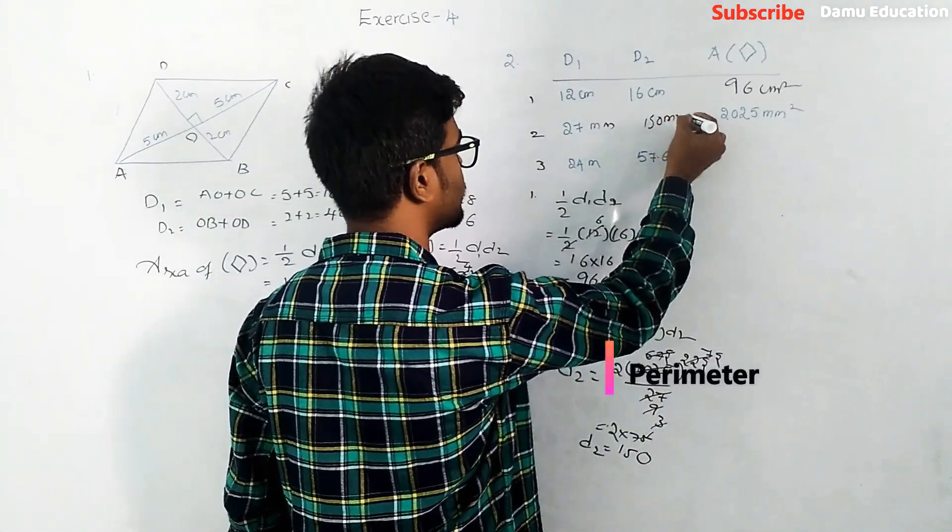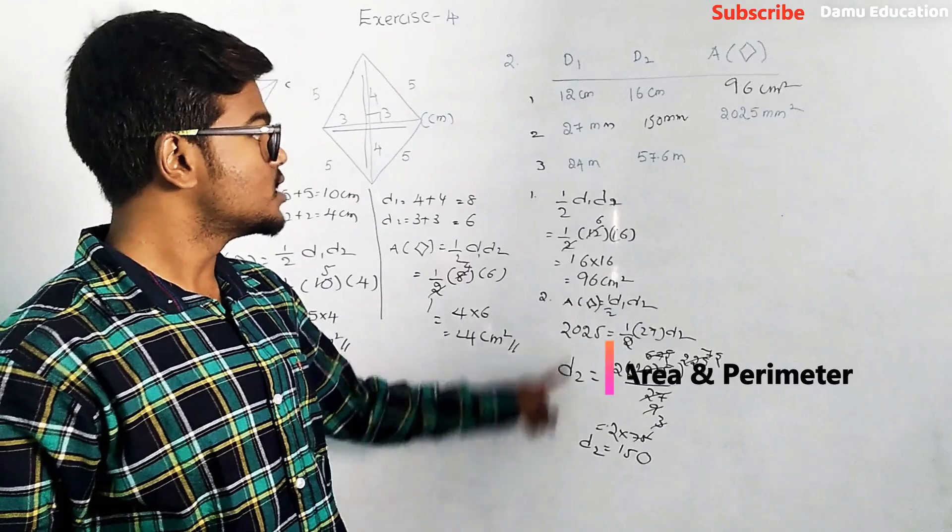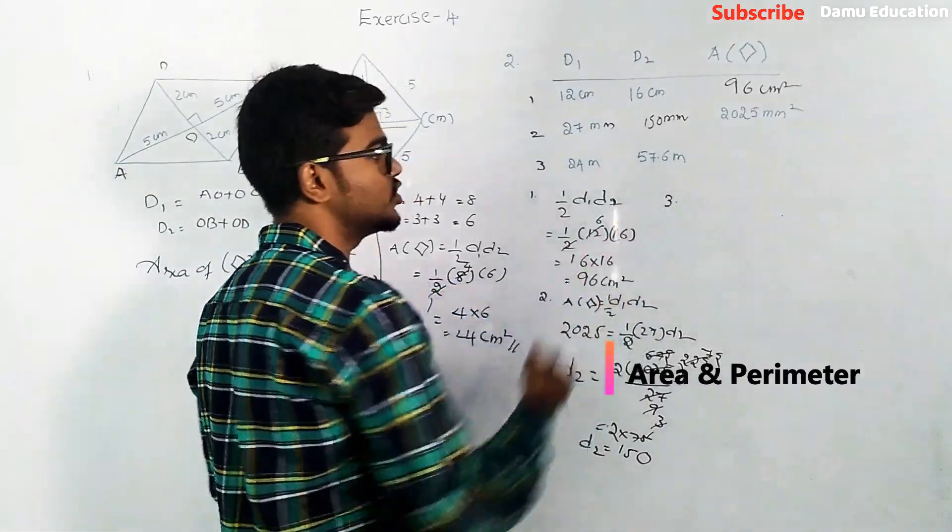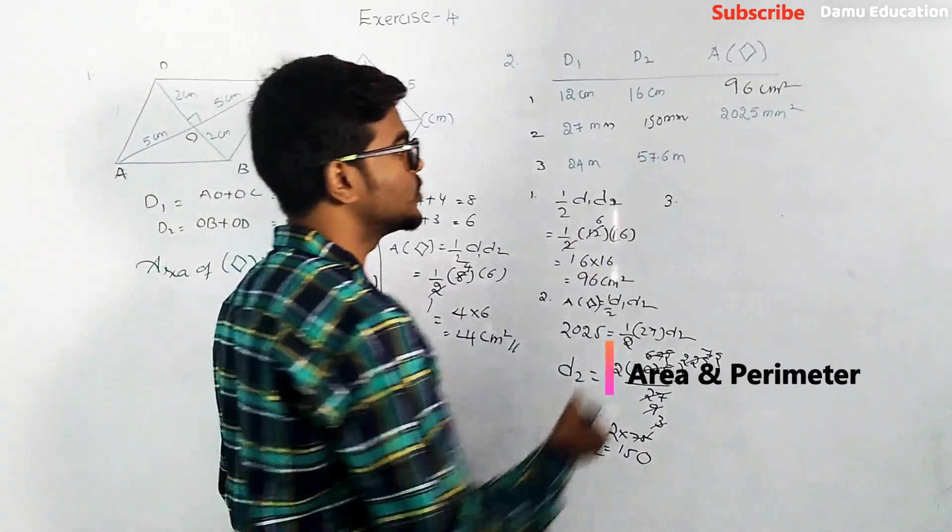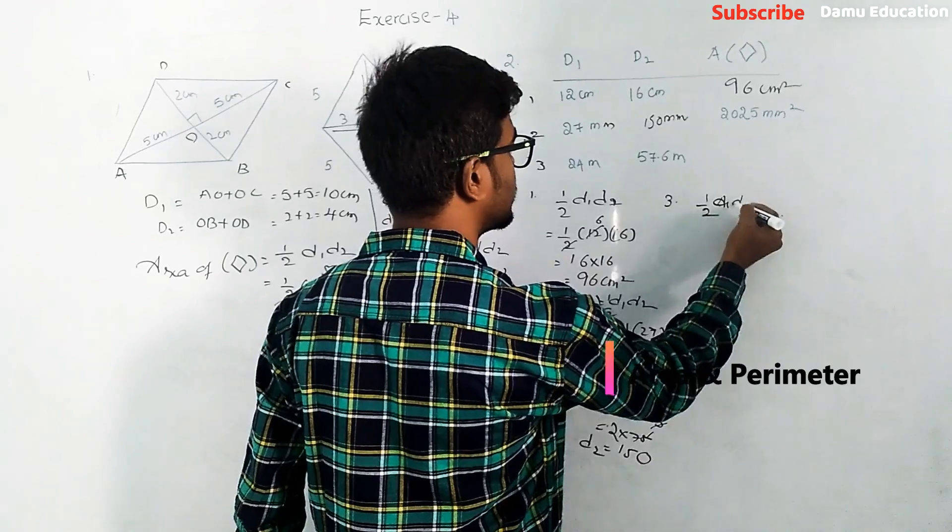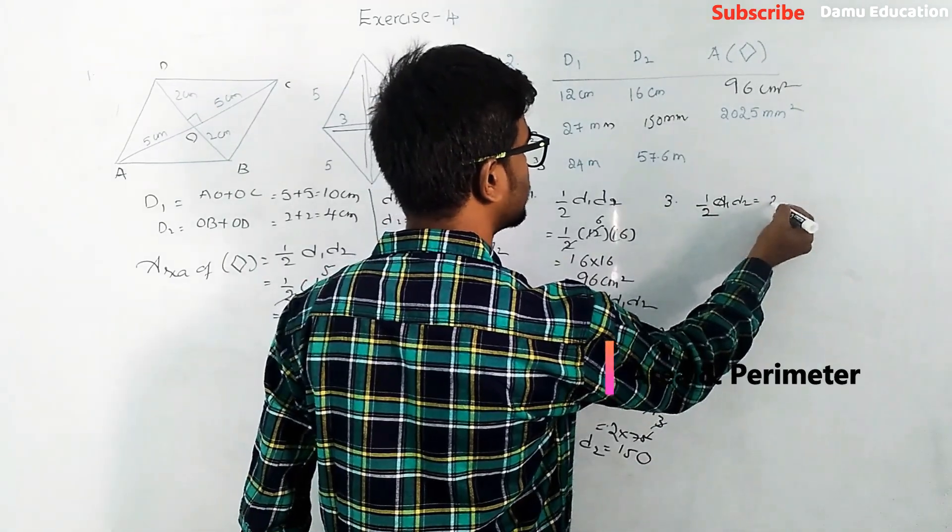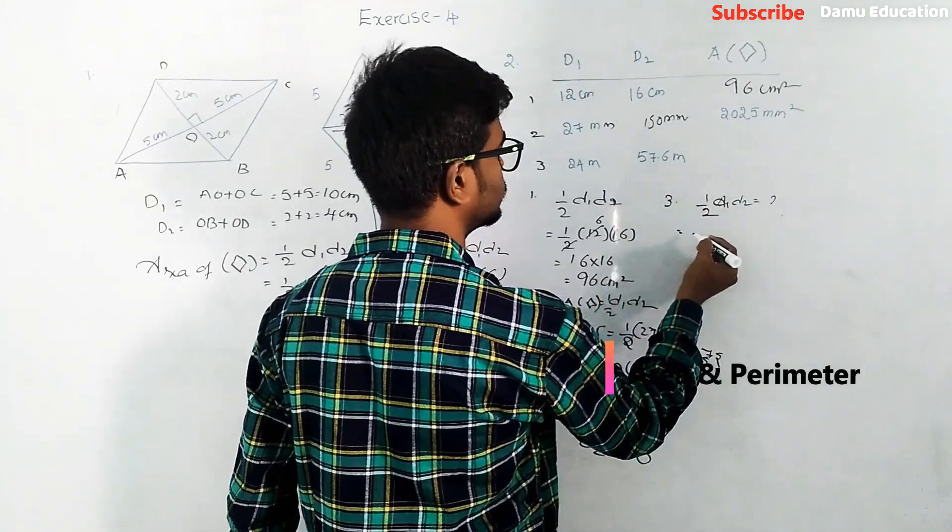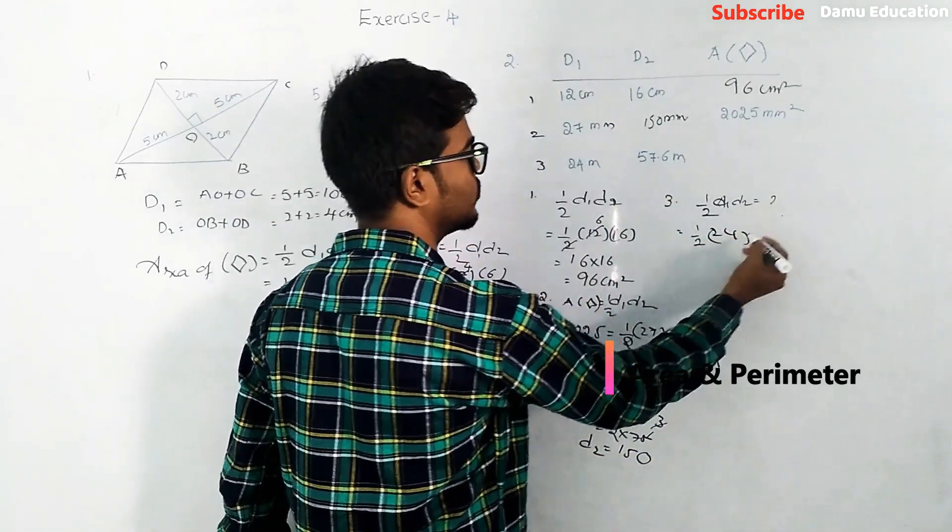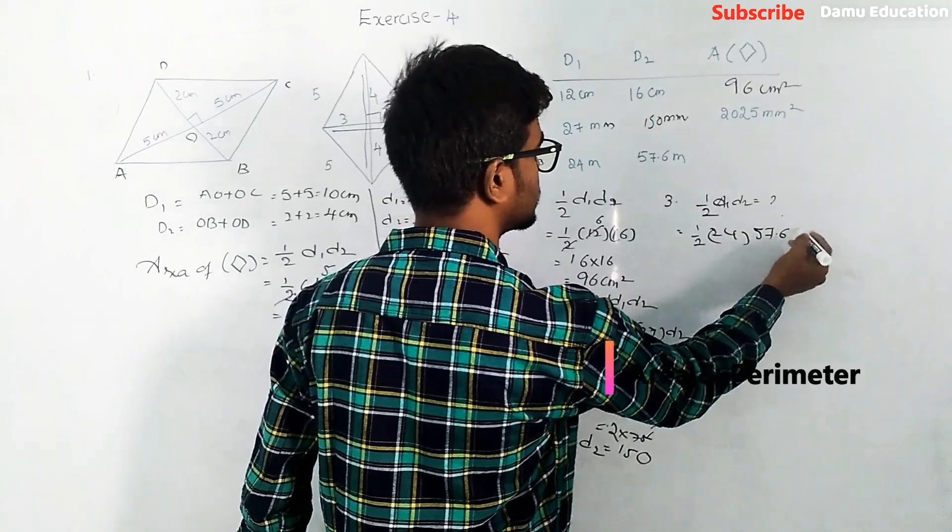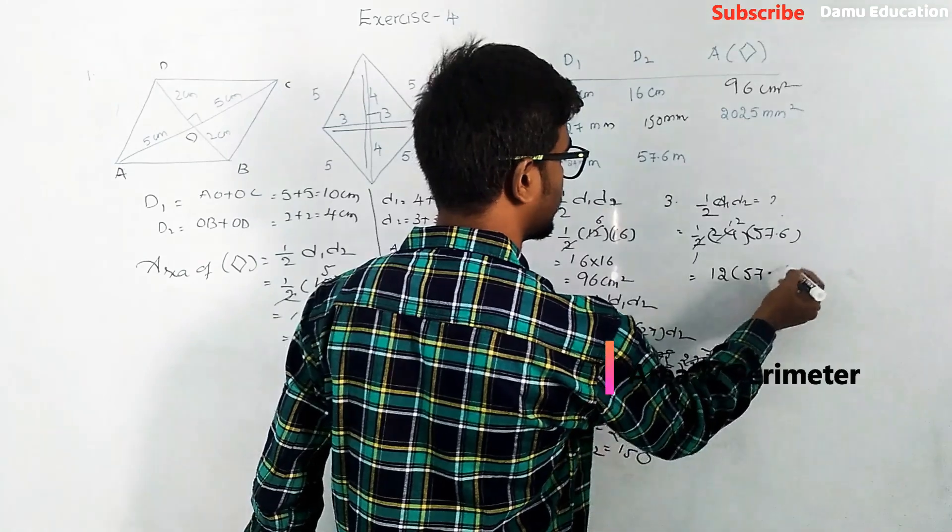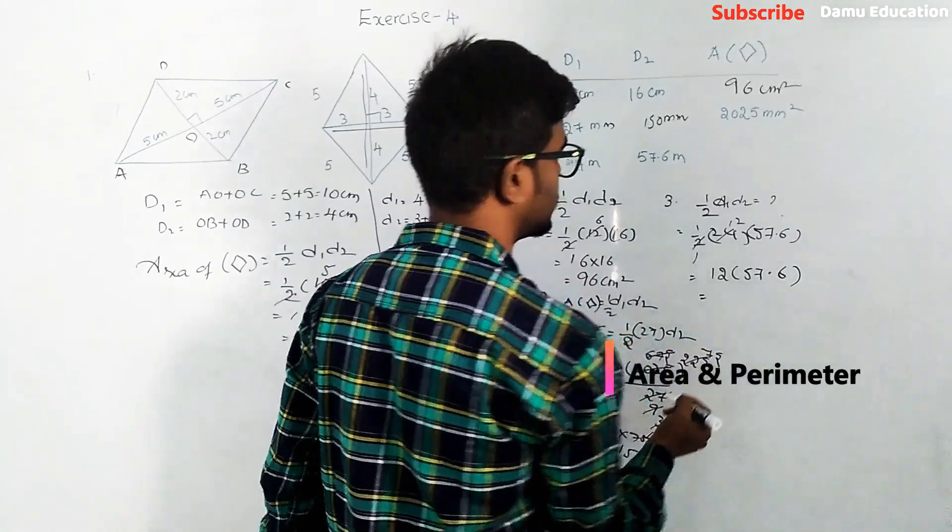Next - d1 and d2 are given, we have to find area of rhombus. So half into d1 times d2 - half into 24 into 57.6. So 12 into 57.6 equals 691.2 meters square.